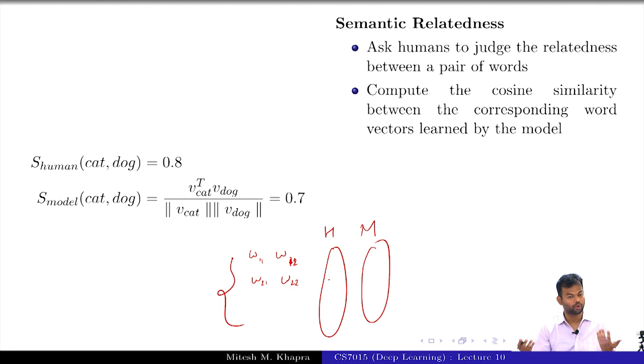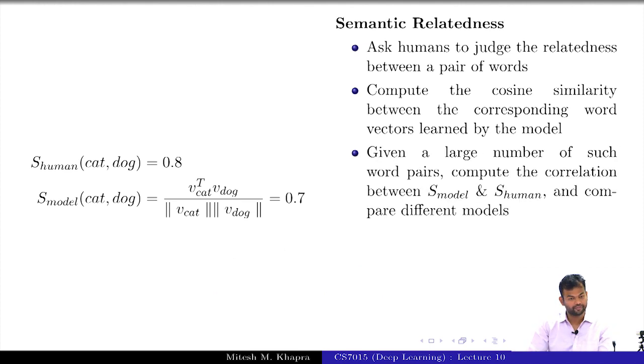I can compute the correlation between these two decisions or these two random variables, and I would want that for a good model this correlation should be high. Whenever humans said that the two words are actually similar, the model's word vectors should also predict a high cosine similarity, and whenever humans said that the two words are not similar, the model's word vectors should also result in a low cosine similarity. That is one way of evaluating how good your word representations are.